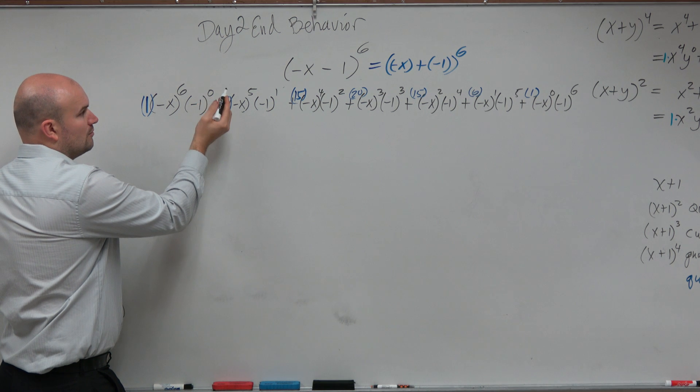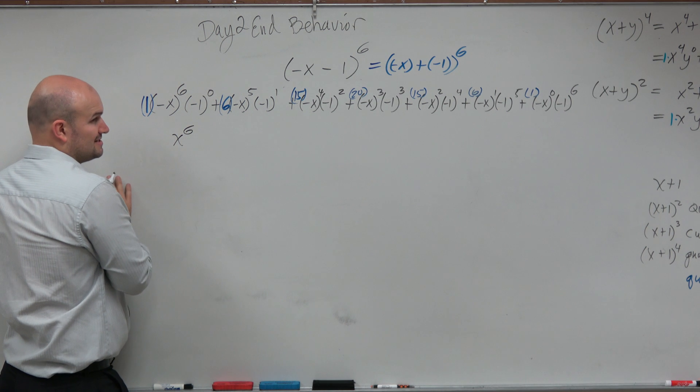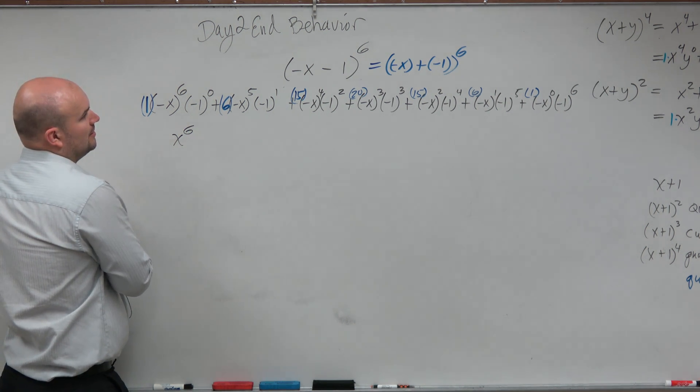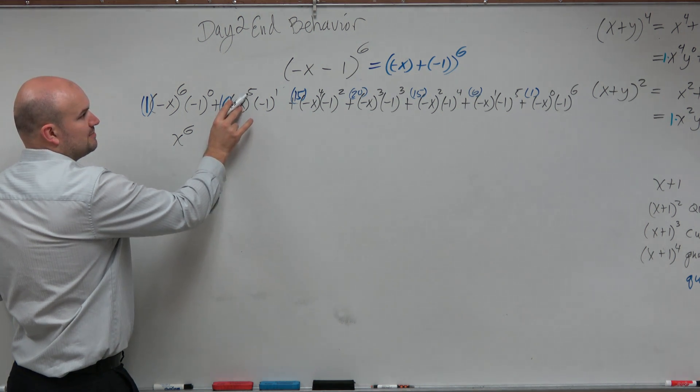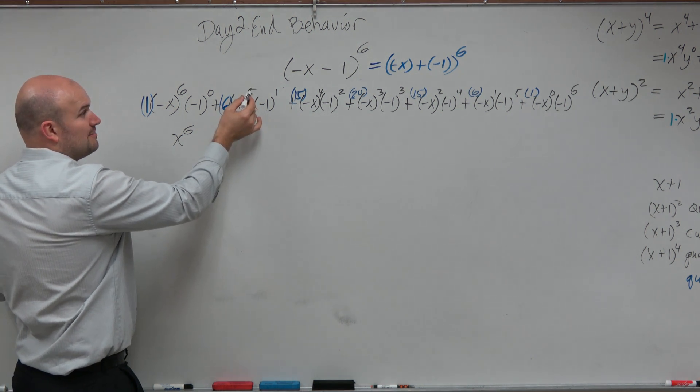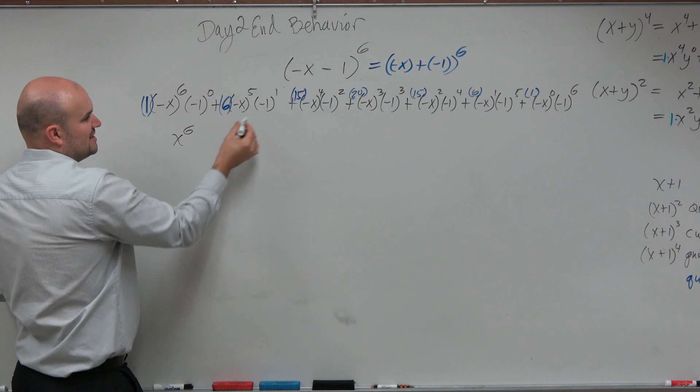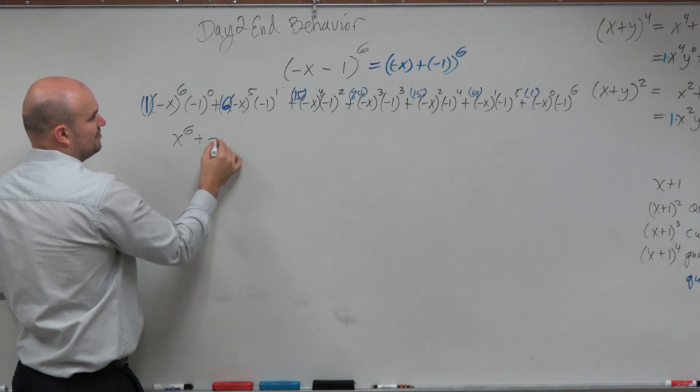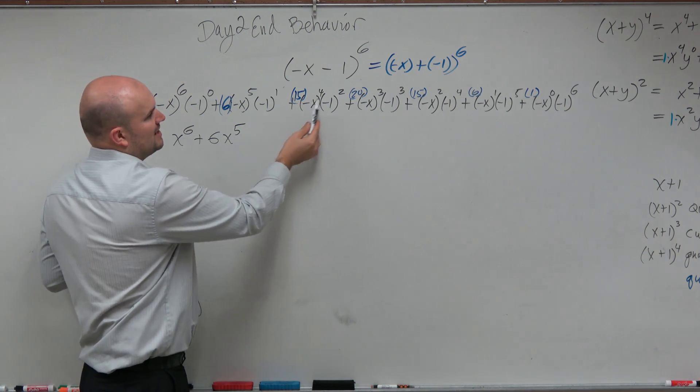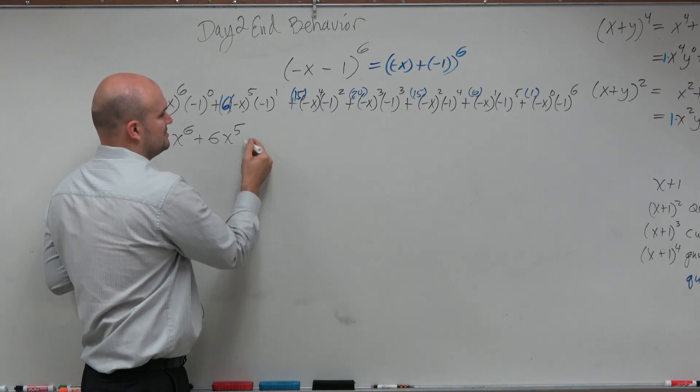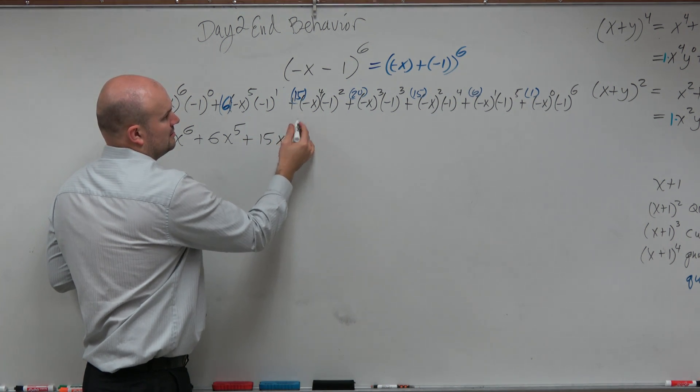Anything raised to the 0 is 1. Negative x raised to the 6th power is going to be a positive x to the 6th power. Let's see. This is going to be negative x raised to the 5th power. Anything negative raised to an odd power is negative. Anything negative raised to an even power is positive. So therefore, it's a negative times a negative, which is a positive. So it's plus 6x to the 5th. Over here, we're going to have a positive and that's going to be positive. So that's positive 1. So that's going to be a plus 15x to the 4th power.